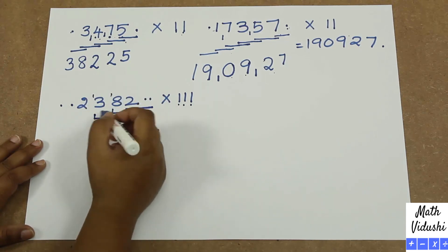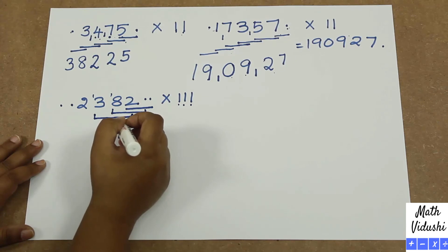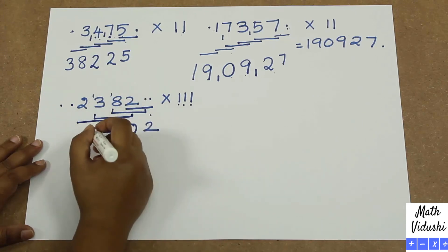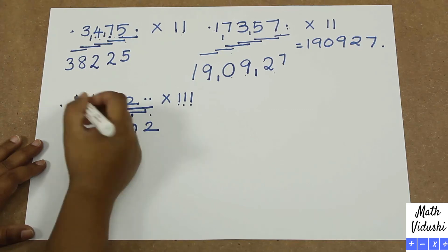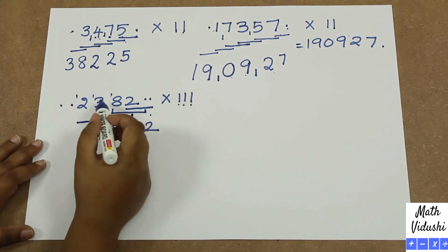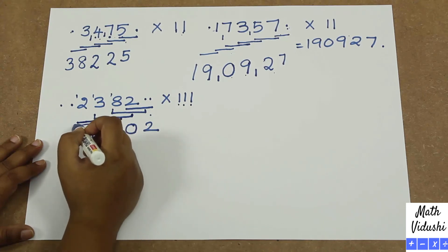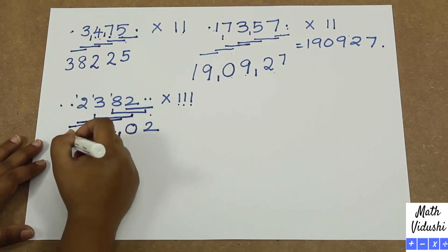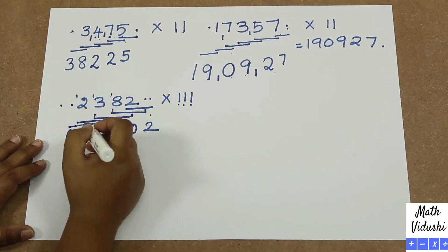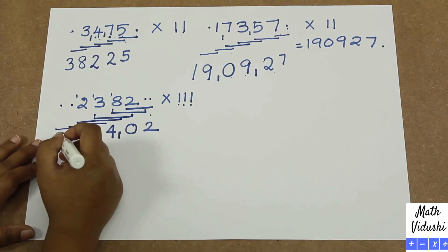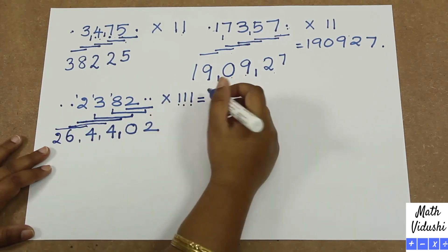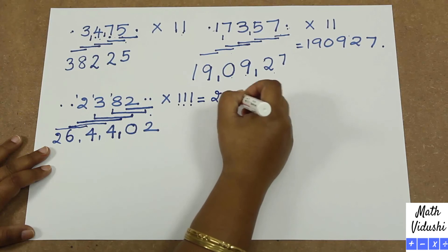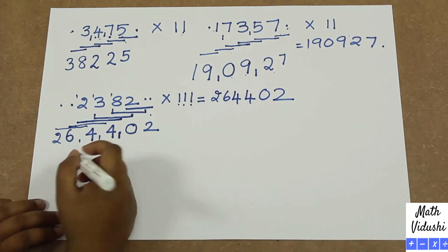You put a 1 carryover here. Again you take 3 numbers at a time from 8: 8 plus 3 is 11, plus 2 is 13, plus the carryover 1 is 14 — so you write 4 here and carry 1. Again take 3 numbers: 3 plus 2 is 5, plus 1 is 6, plus the carryover 1 is 6. Then the last group is 2 plus 0 plus 0 which is 2. So the answer for 2382 multiplied by 111 is 264,402.